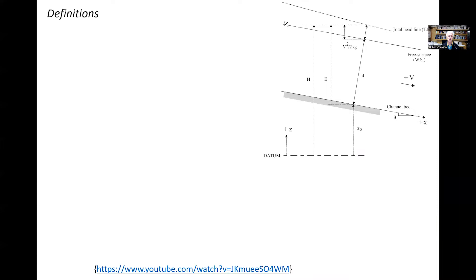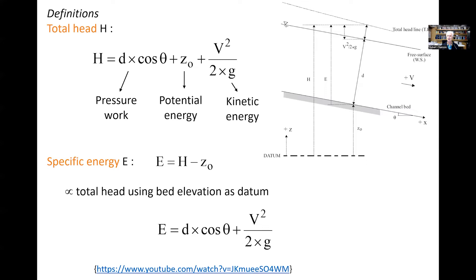Let us now introduce two key definitions in open channel flow. The first one is total head — the same definition as in pipe flow — expressed as d·cos(θ) + z₀ + v²/2g. The Bernoulli equation for a smooth and short transition implies that the total head is constant. The first term relates to pressure work, the second to potential energy, and the third to kinetic energy.